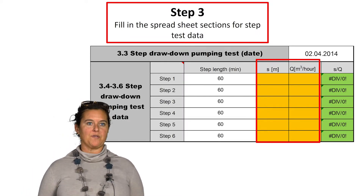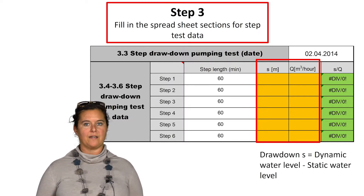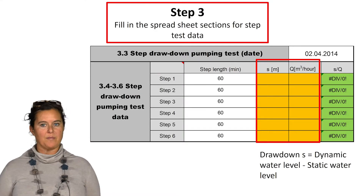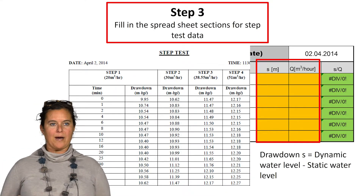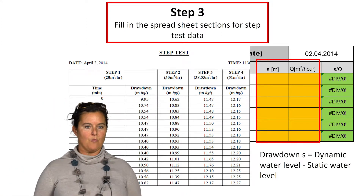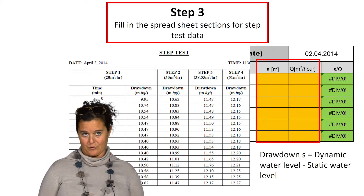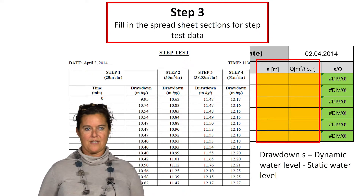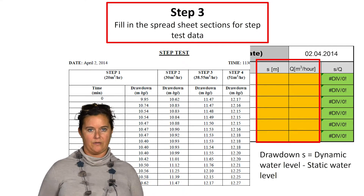The minimum number of steps should be 4 and the optimal number of steps should be 6. The drawdown is defined as the difference between the dynamic water level and the static water level. Going back to our borehole completion report, I can show you one of the most common mistakes made when compiling the report, which is actually naming the dynamic water level wrongly as drawdown.